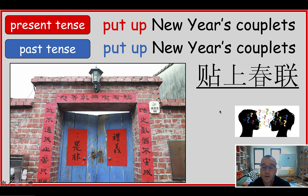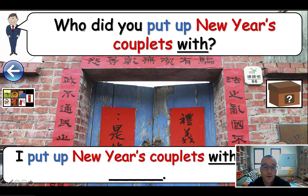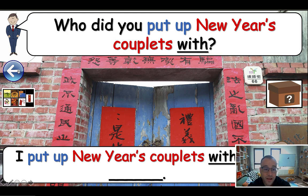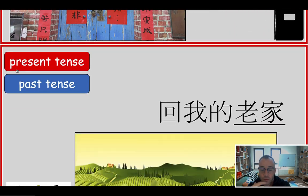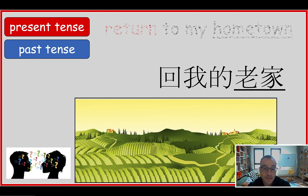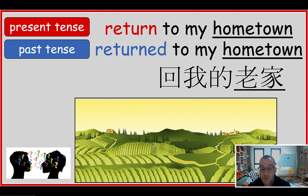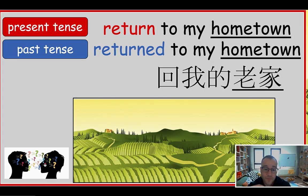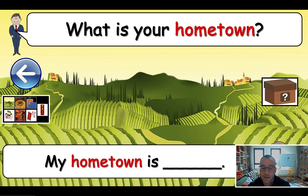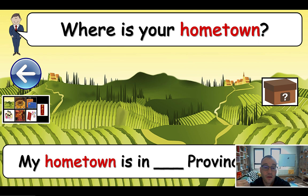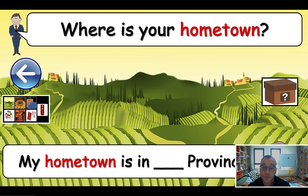Same drill — write it down, drill it, then allow them to talk. For example: 'Who did you put up New Year's couplets with?' They can practice for a minute because we're going to play a game at the end and I want them to be familiar with this. All of my lessons are designed as speaking and listening lessons — that's the primary thing I'm teaching. So this lesson is really designed to get them to talk and interact with me. For example: 'What is your hometown? My hometown is...' — they say their hometown — and then 'Where is your hometown?' and they tell me which province it's in.